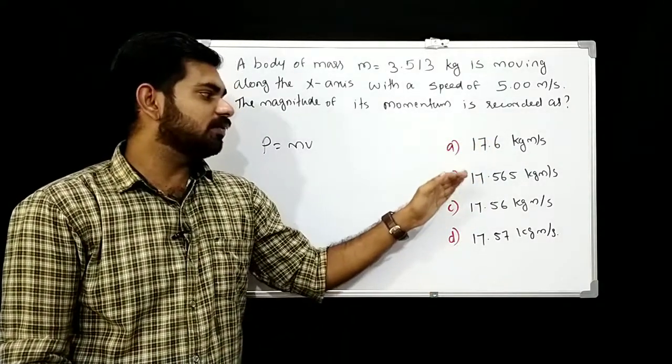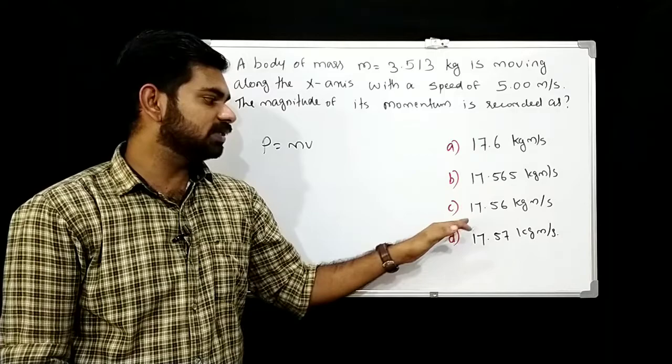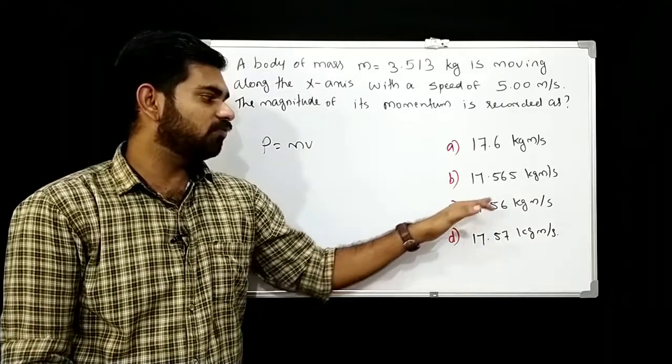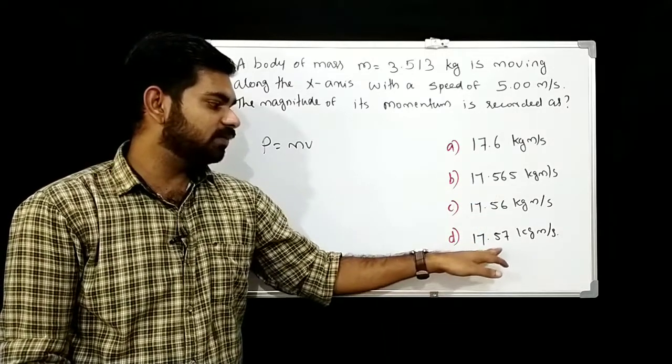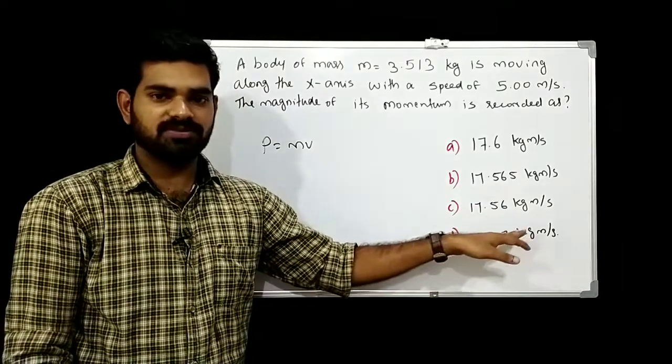Option B: 17.565. Option C: 17.56. Option D: 17.57.